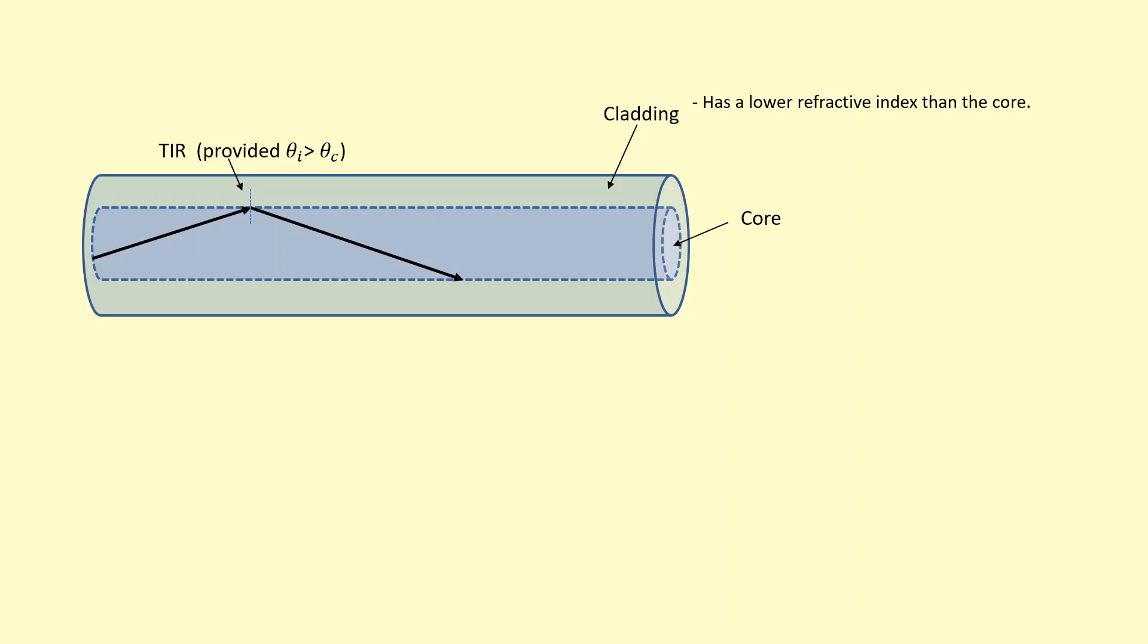This way, the light can travel through the core of the optical fiber. And even if you bend it, it can still travel along by total internal reflection.